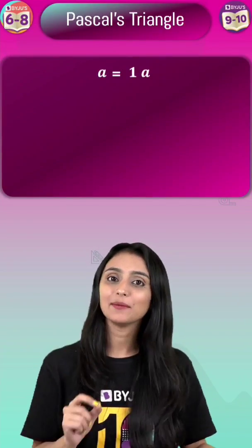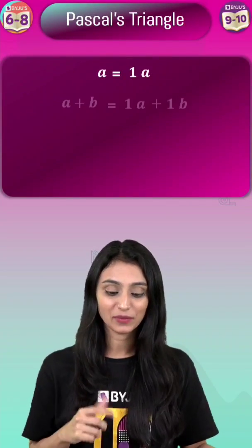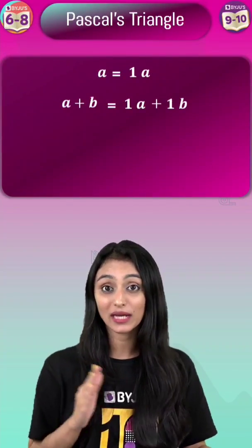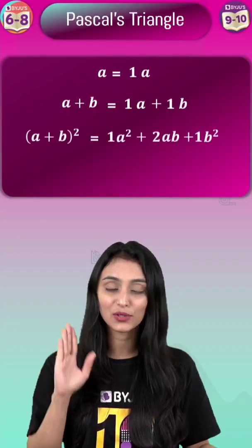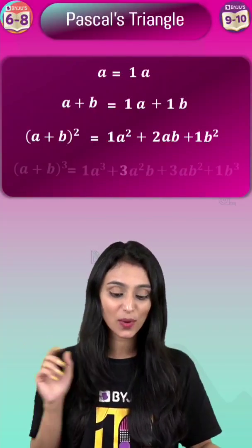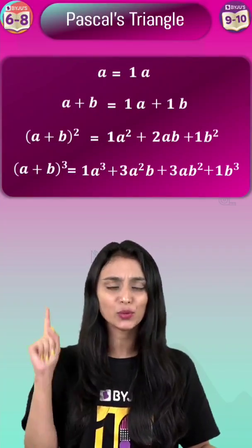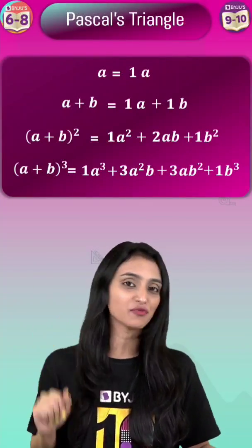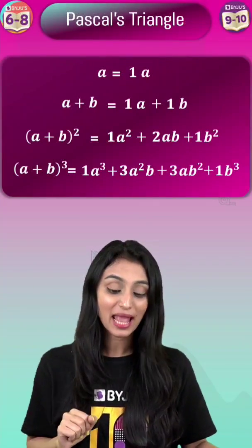If I have 'a', it can be written as 1a. 'a plus b' is 1a plus 1b. Similarly, (a+b) whole square, (a+b) whole cube — you can see the coefficients for each one of them.